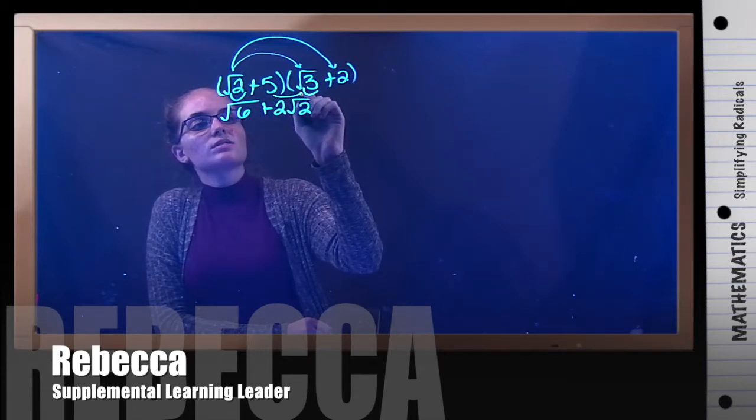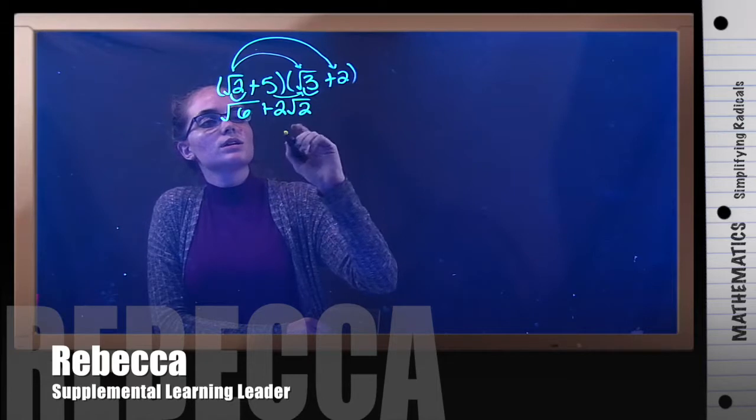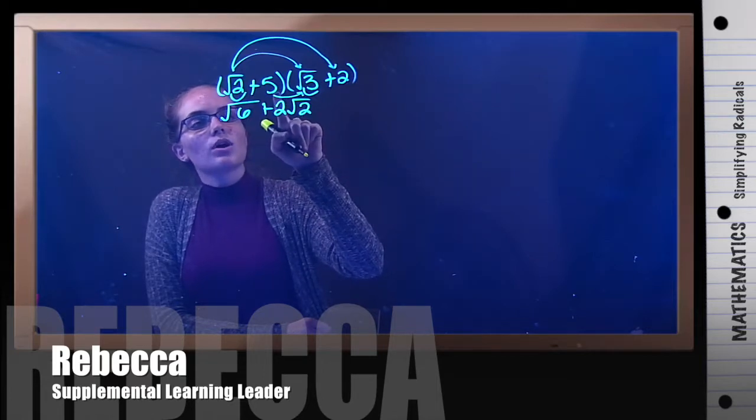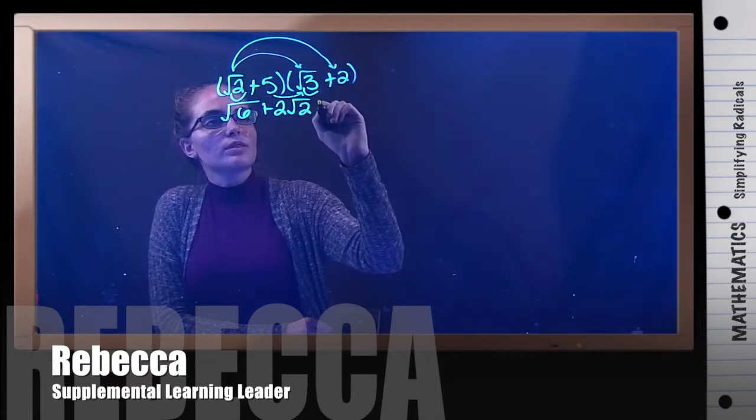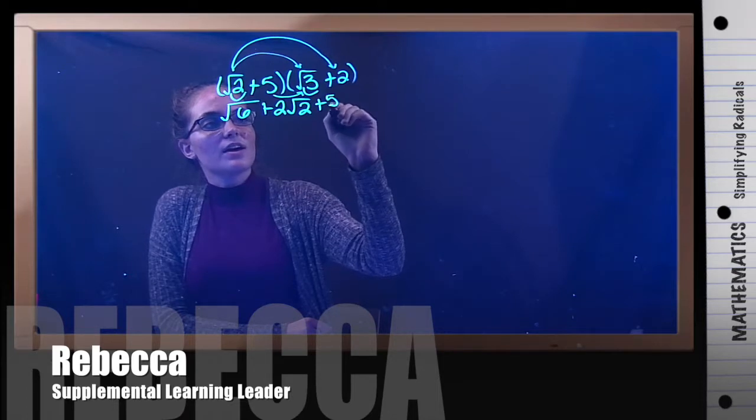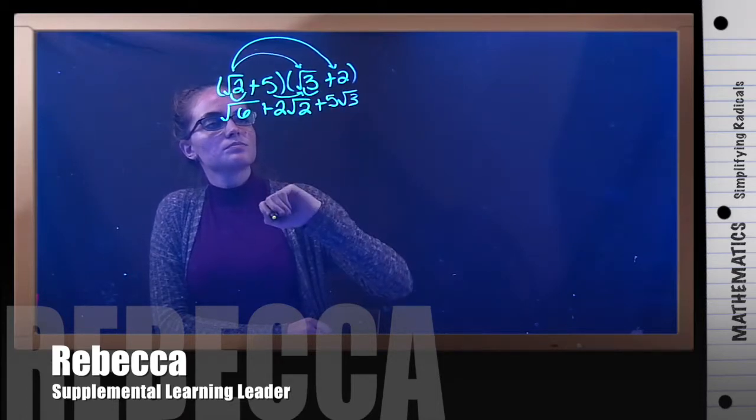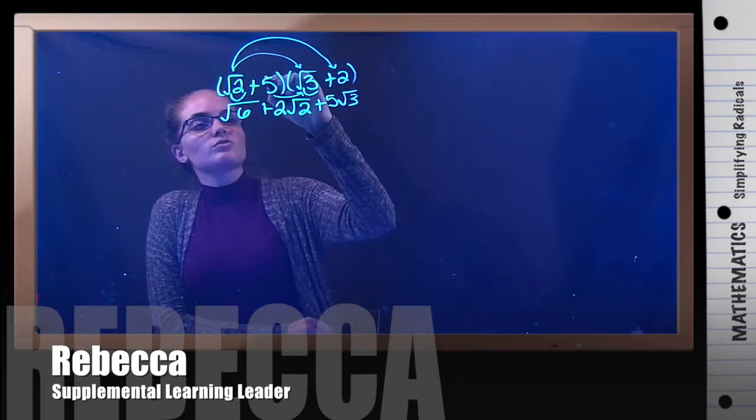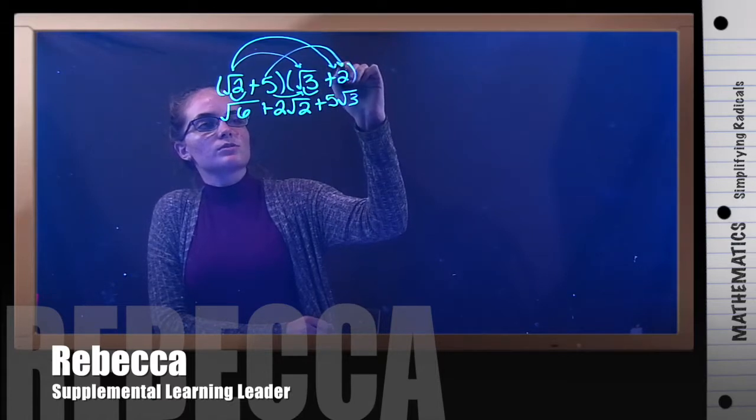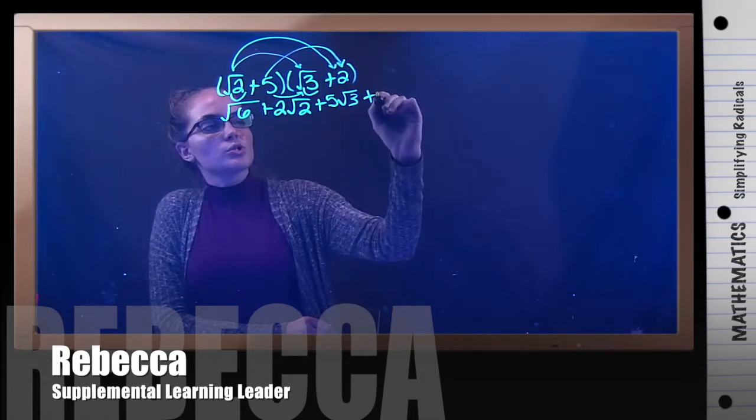Now we're going to do 5 times the square root of 3. Same thing here, there's no radical on this 5. So we're just going to write this as 5 square root of 3. Now we're going to do 5 times 2. And 5 times 2 is 10.